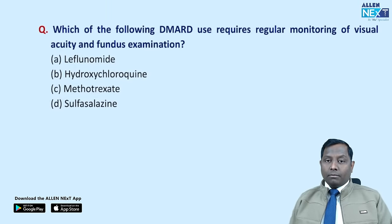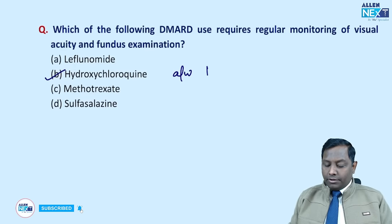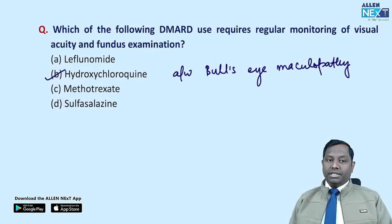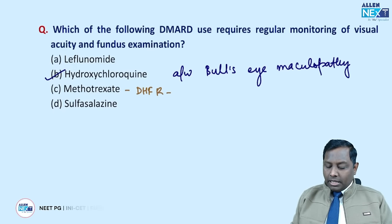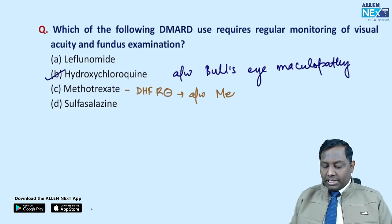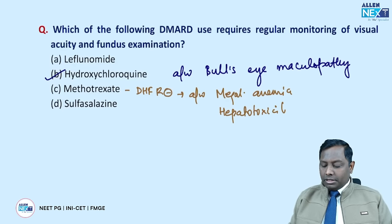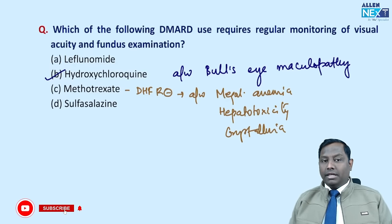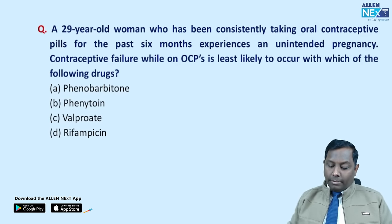Which DMARD requires regular monitoring of visual acuity and fundus? This is a previous-year question and the answer is hydroxychloroquine, which is associated with bull's eye maculopathy — an irreversible phenomenon. Methotrexate is a dihydrofolate reductase inhibitor associated with megaloblastic anemia, hepatotoxicity, and crystalluria. Sulfasalazine and leflunomide have no visual-related side effects. The correct answer is hydroxychloroquine.